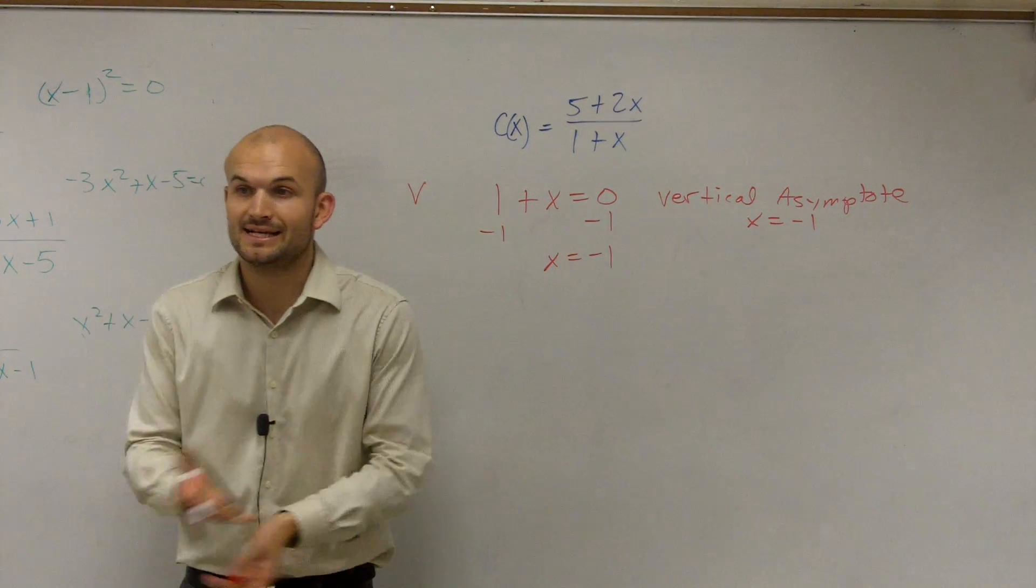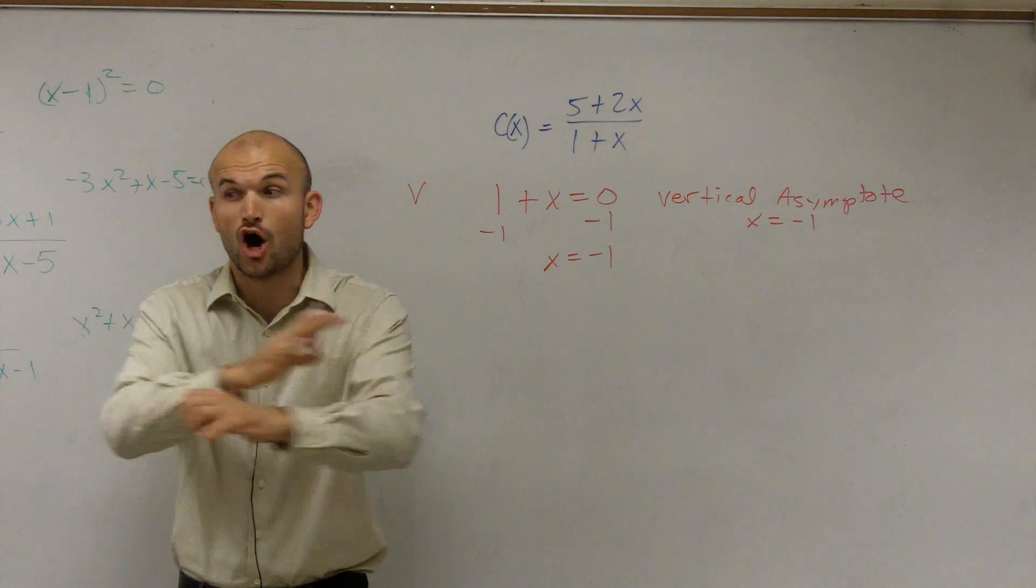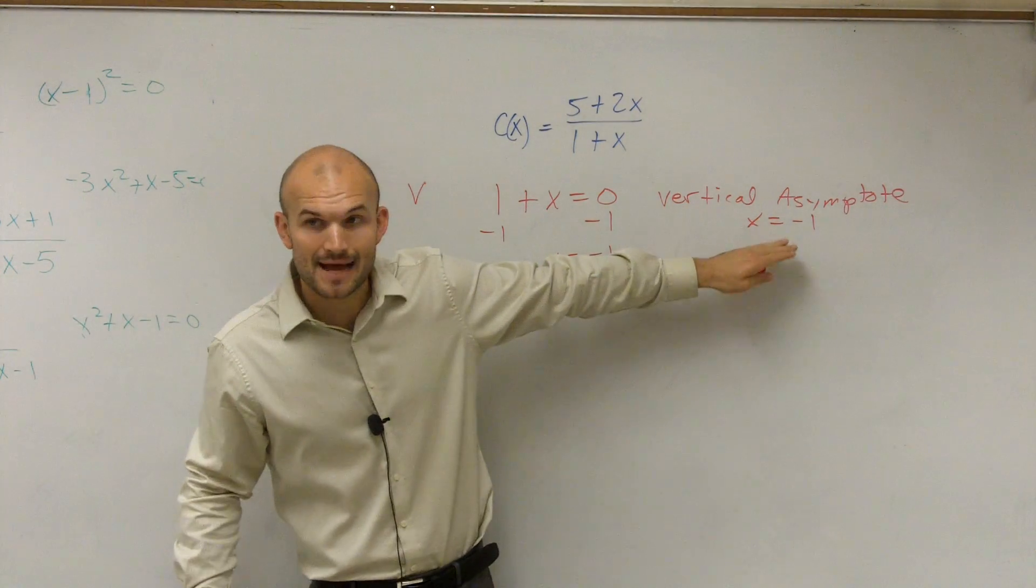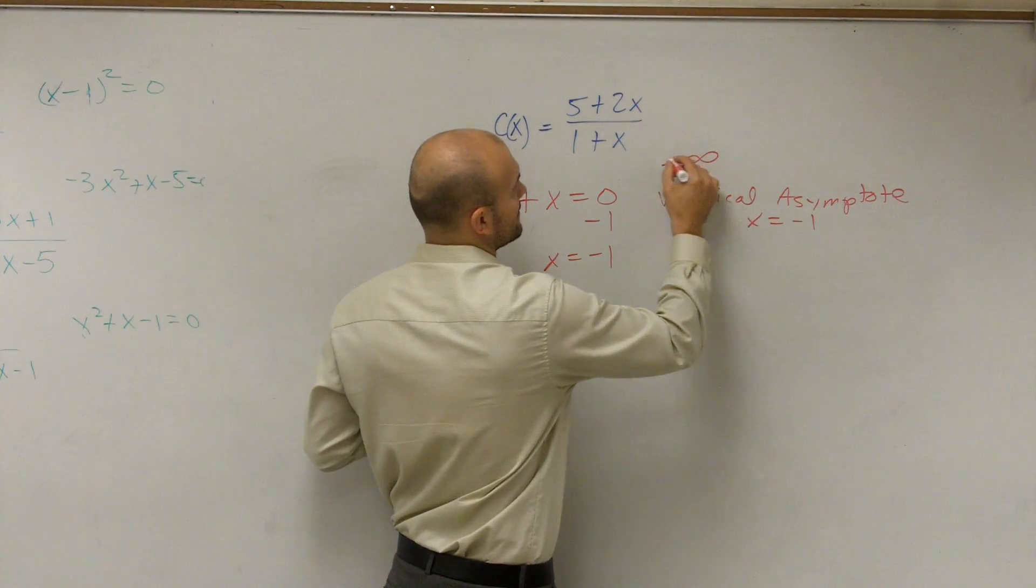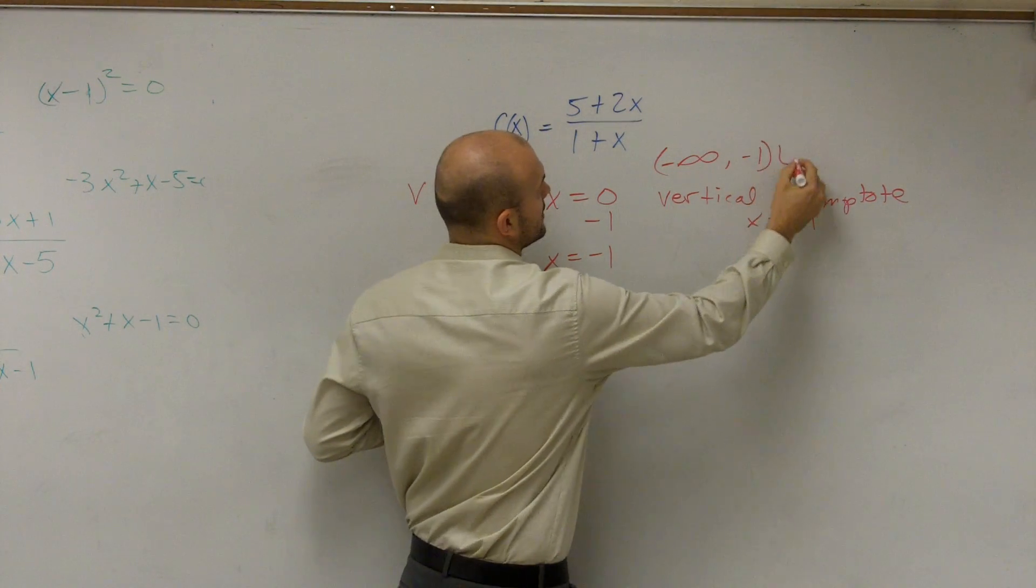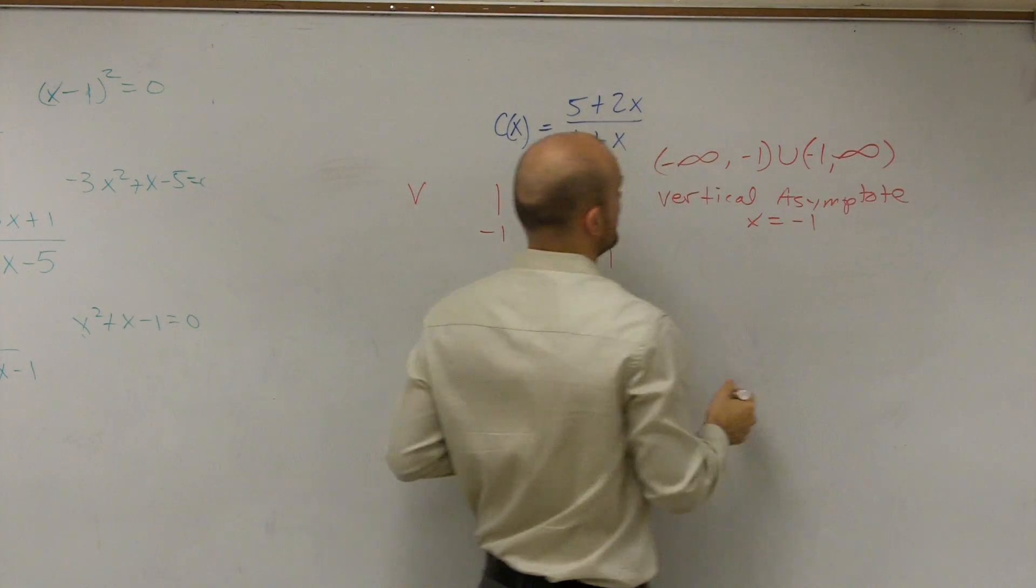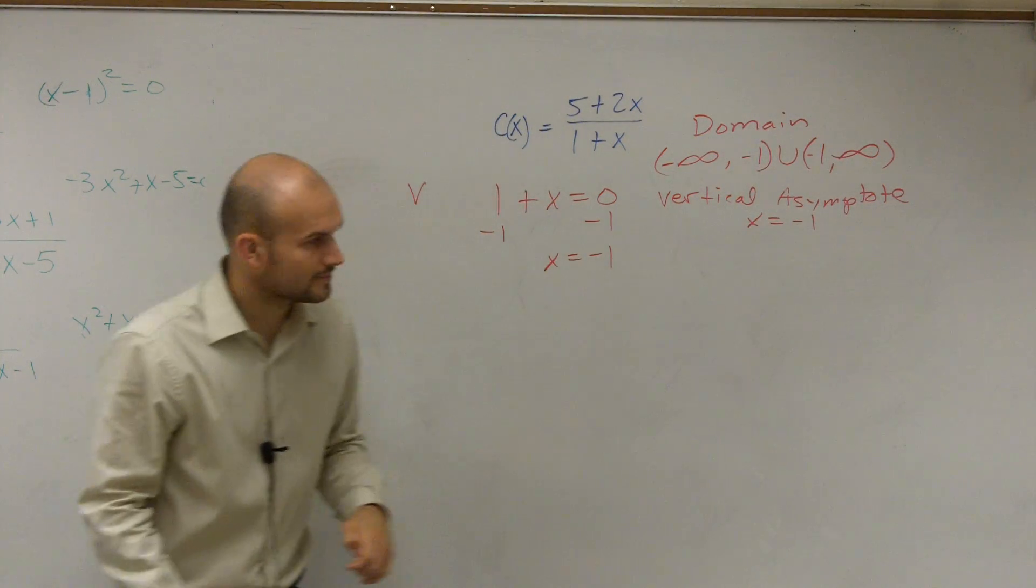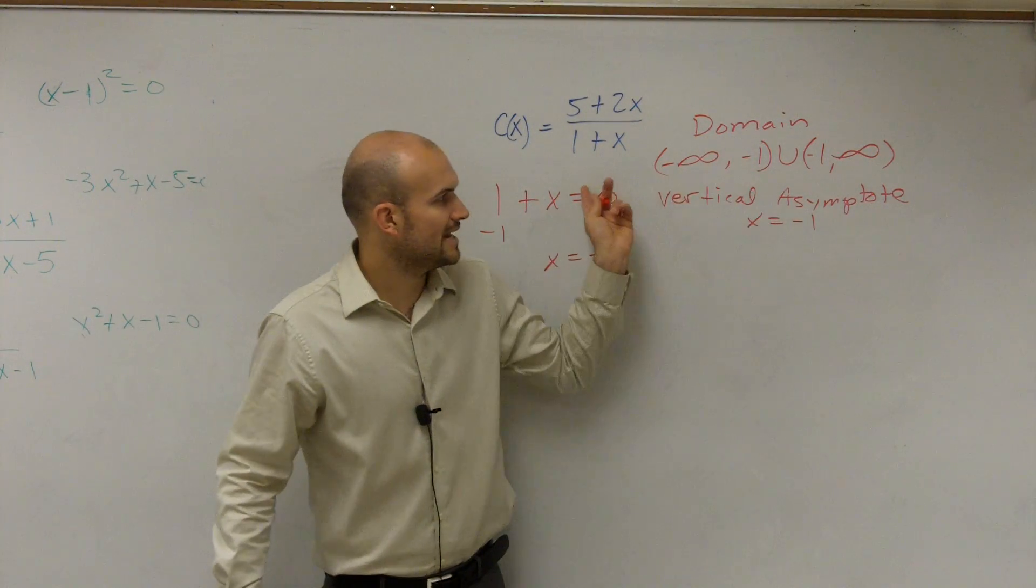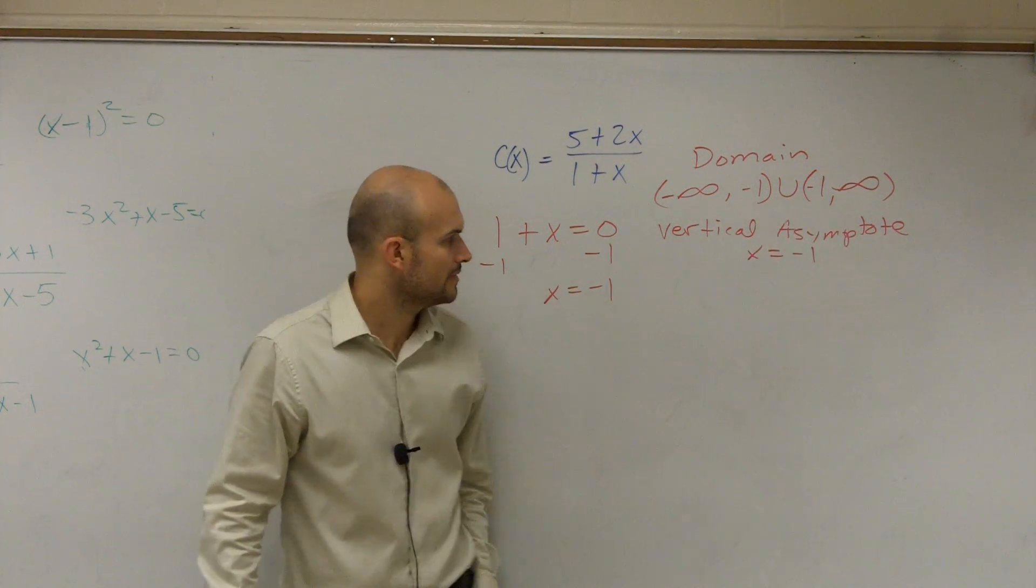That means your domain is going to be... we're not working with domain right now, but your domain is all real numbers, except when x equals negative 1. And we can write that as from negative infinity to negative 1 union negative 1 to infinity. That means all from negative infinity to infinity, which are all real numbers, except for our value negative 1.